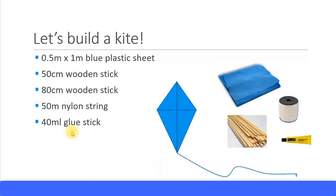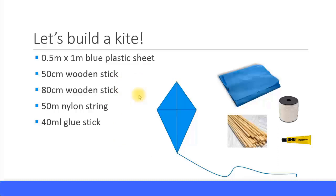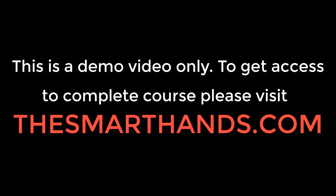As an example, I'm going to build a kite. The items I need are a plastic blue sheet, wooden sticks, nylon string, and glue. I'm not going to create any material master, any bills of material, any routing, or any activity types. Without touching any of those objects, I'm going straight to create a base planning object and enter the amounts and content directly.